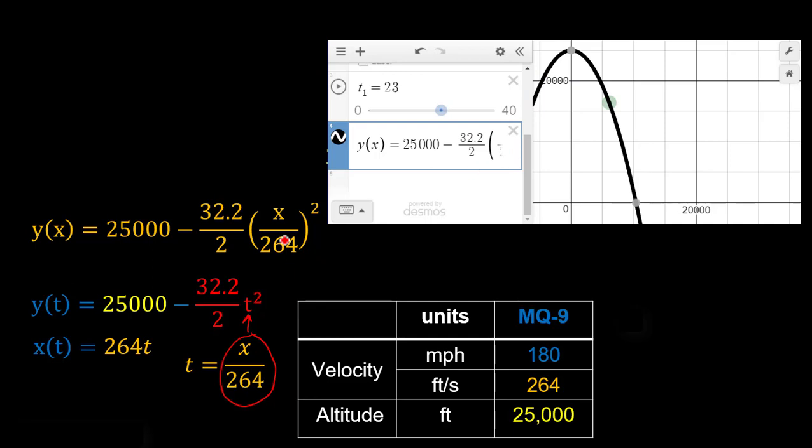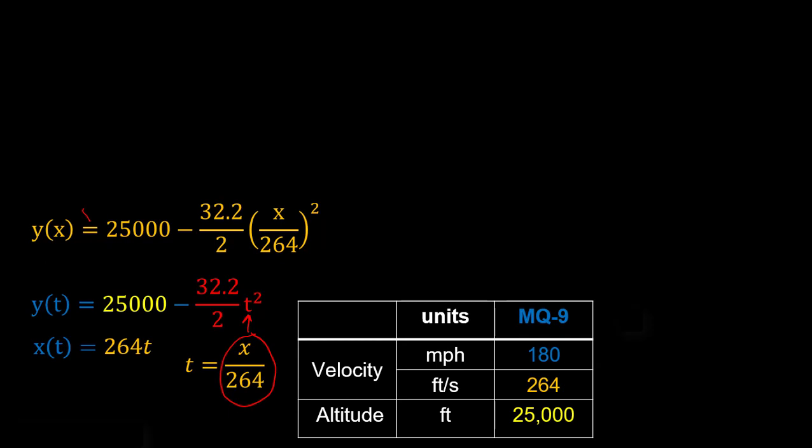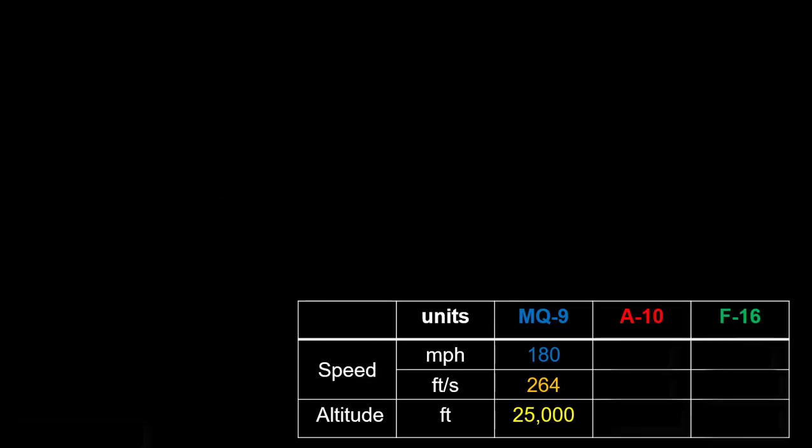So we can often represent parametric functions as Y in terms of X, but sometimes when we do that, we lose some information, and it's not quite as handy as you can see in this case. Let's go ahead and clear this out.